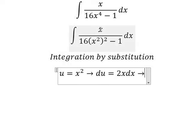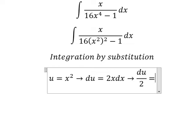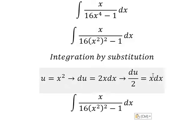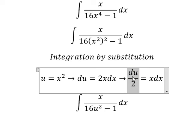Because we don't have the number 2 here, so we need to divide both sides by 2. So this one will change to u. x dx will change to this one.